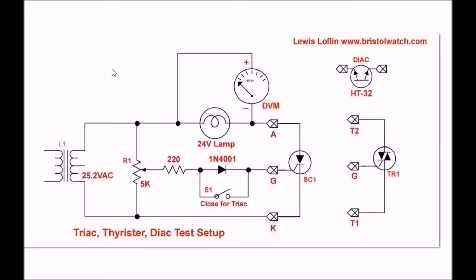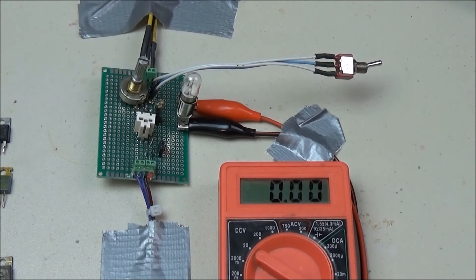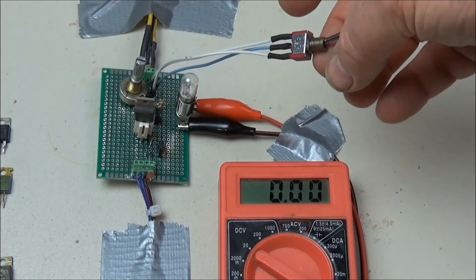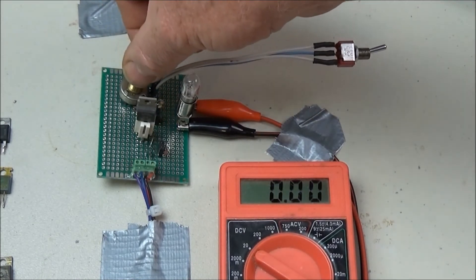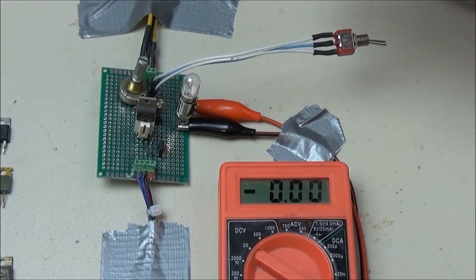Alright, the rest of this video, which has the circuit connections you see here, is going to run another series of tests and expand on what we've already discussed. Alright, the first device we're going to check is an SCR. I'm just going to go ahead and plug it into the socket. Here's a power switch. I will make sure the potentiometer is turned all the way down.